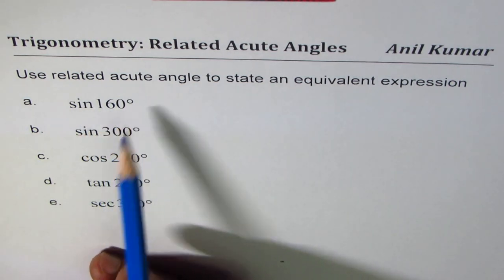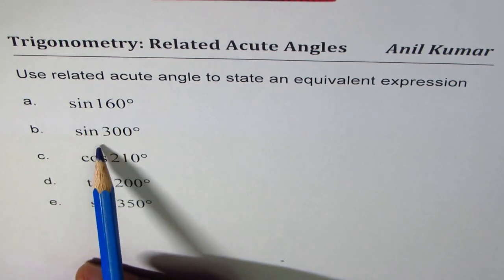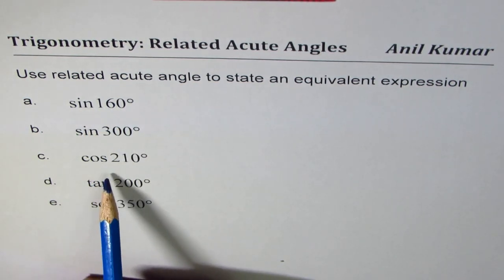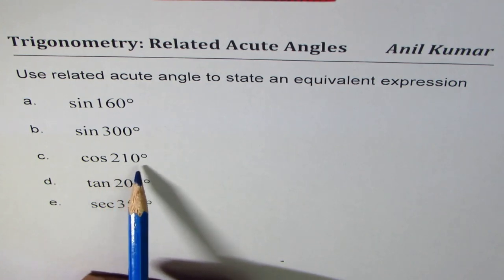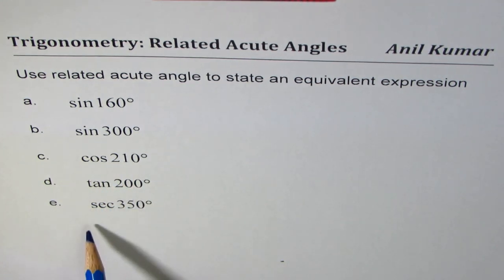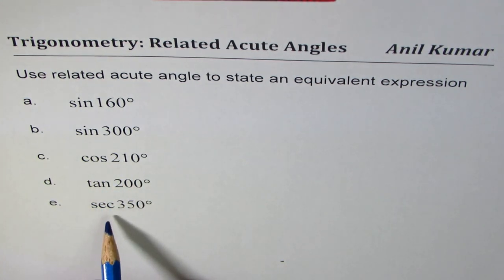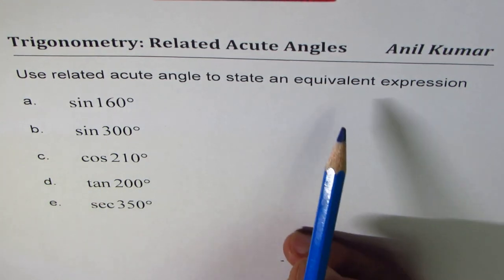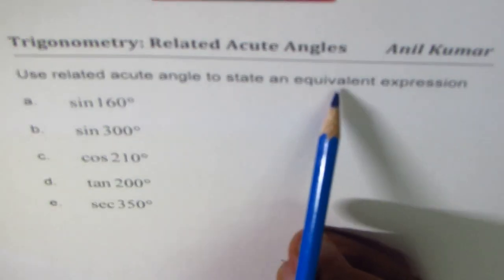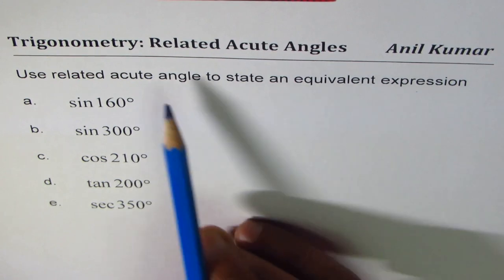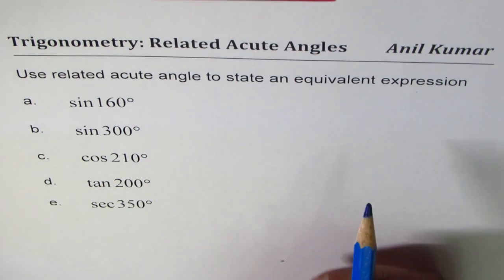The five examples are: sine of 160 degrees, sine of 300 degrees, cosine of 210 degrees, tan of 200 degrees, and secant of 350 degrees. We need to write them as equivalent expressions using an acute angle.